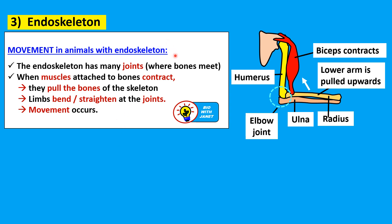For movement in animals with an endoskeleton: the endoskeleton has many joints where bones meet. When the muscles attached to the bones contract, they pull the bones so the limbs bend or straighten at the joints. For example, to bend the arm at the elbow joint, the biceps muscle contracts and pulls the radius — and the ulna follows — upwards, so the lower arm moves up and the arm bends at the elbow joint.